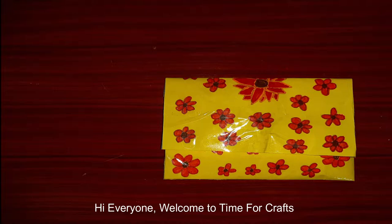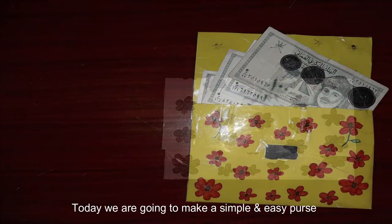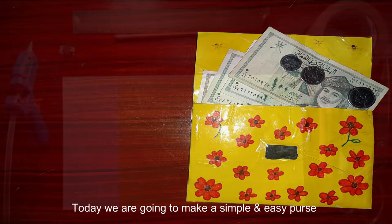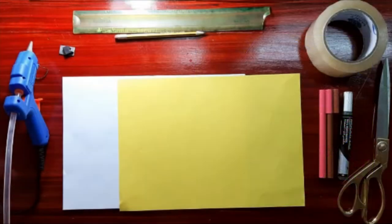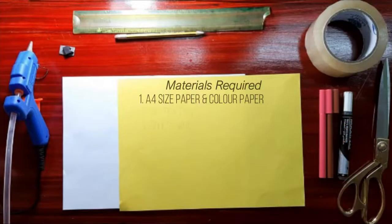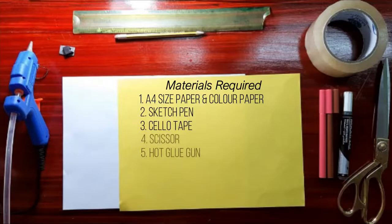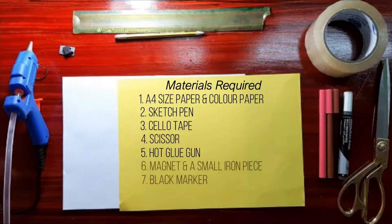Hi everyone, welcome to Time for Crafts. Today we are going to make a simple and easy purse. Materials required: A4 size paper and color paper, sketch pens, cello tape, scissors, hot glue gun, magnet and a small iron piece, black marker.